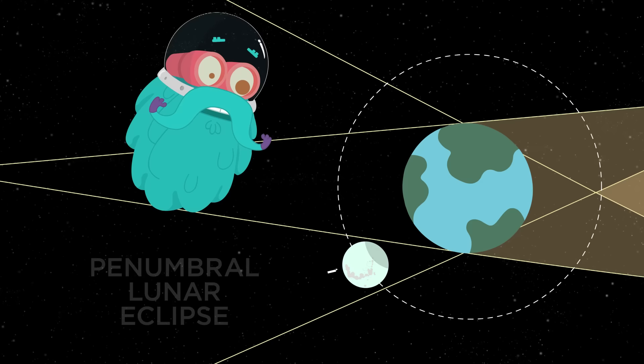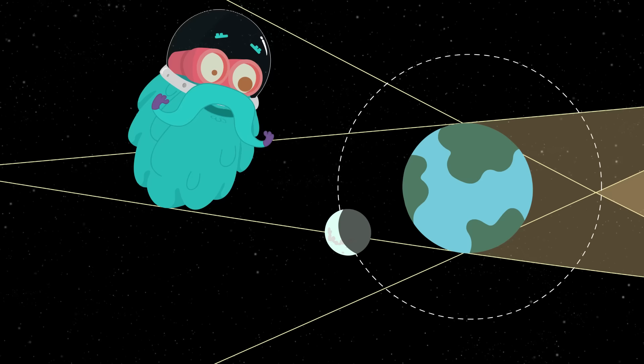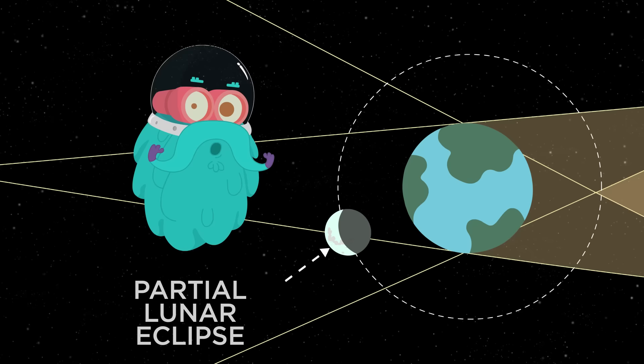When part of the Moon is in the Penumbra and a part of it is in the Umbra, we see a partial Lunar Eclipse. And when the Moon travels to the Umbra, we see a total Lunar Eclipse.